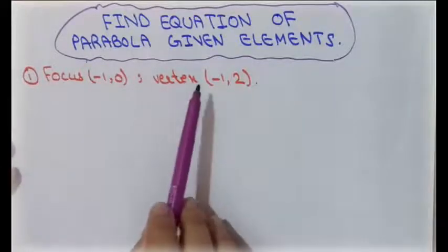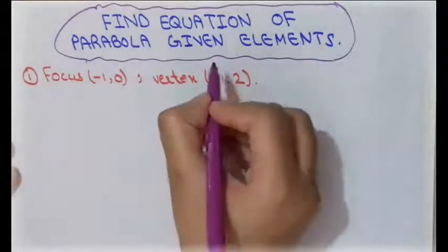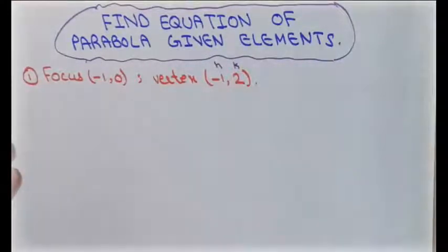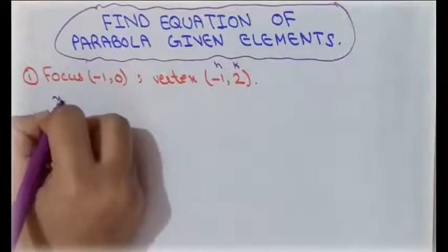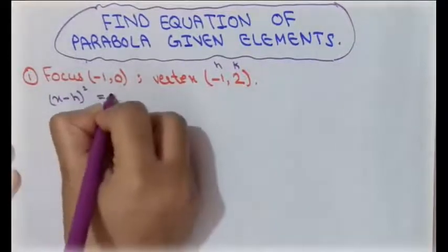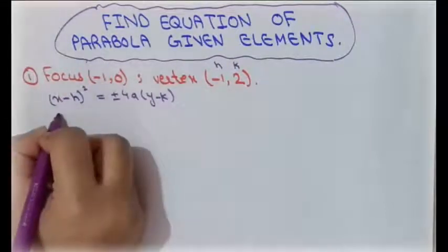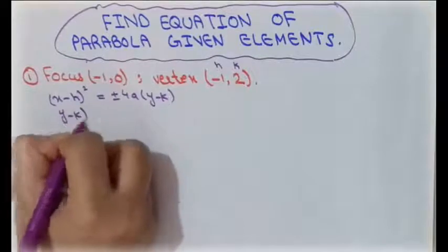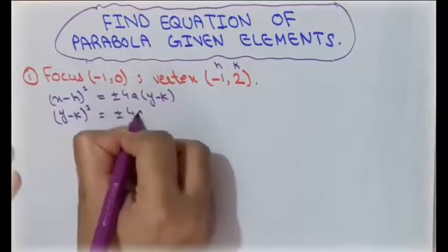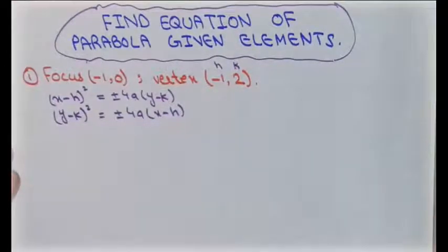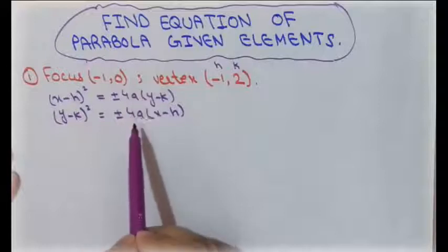The vertex is not at the origin, meaning there are values of h and k. So we use one of the equations: (x minus h) squared equals plus or minus 4a(y minus k), or the second form: y minus k squared equals plus or minus 4a(x minus h). First we analyze the given information to decide which parabola we obtain, then use the suitable equation.